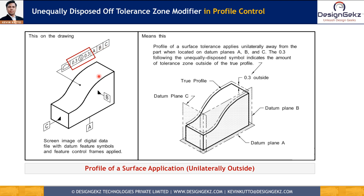As shown in this figure, if there is no U modifier in the feature control frame, it means the 0.3 profile control is equally divided on both sides of the true profile — that means the tolerance zone is plus or minus 0.15 with respect to the true profile, which is defined by the basic dimensions.